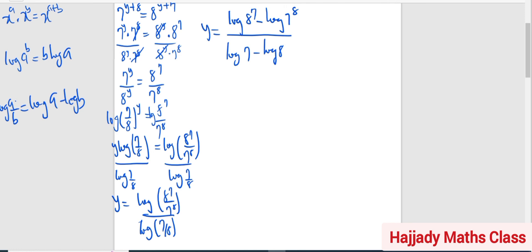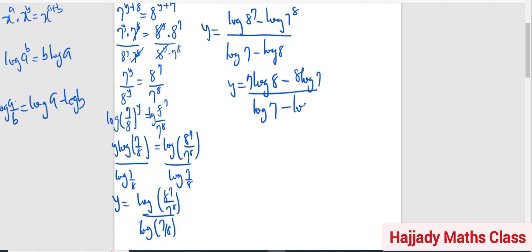And from here, using the same law that says log a raised to power b is the same thing as b log a, the same thing can be applied. So my y would equal 7 log 8 minus 8 log 7, everything over log 7 minus log 8.